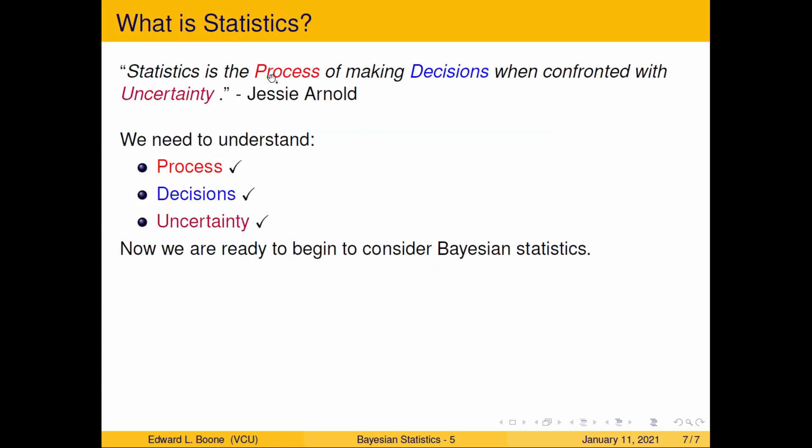Now that we've done this, we have statistics as the process of making decisions when confronted with uncertainty. We've got the basic idea of what the process is — which is the scientific method — what decisions we can make. There are basically three: parameter estimation (what the value might be), hypothesis testing (whether the value is against some reference), and prediction (what a future value might be). For uncertainty, I'm pointing you to the probability playlist I created. Now that we have this framework of what statistics is, we can start thinking about what Bayesian statistics is — otherwise we'd just be wondering why we're doing this. See you in the next video.